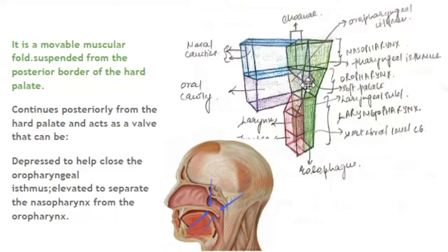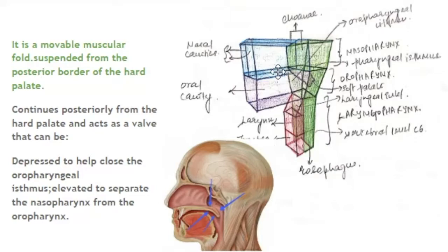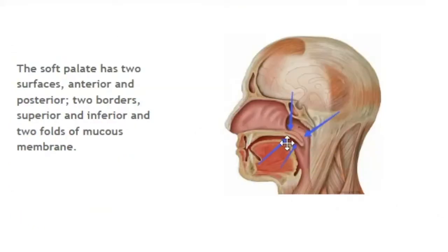It acts as a valve that can either be depressed or elevated. When it is elevated, you can easily visualize that it would separate the nasopharynx from the oropharynx. When it is depressed, it helps close the oropharyngeal isthmus.